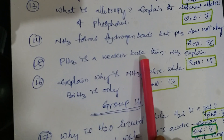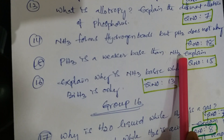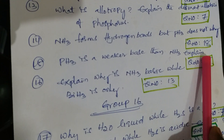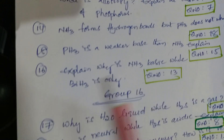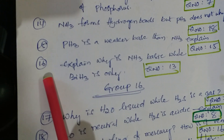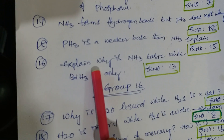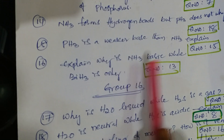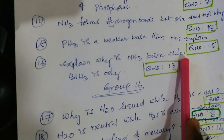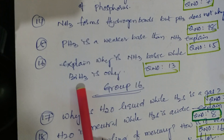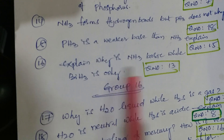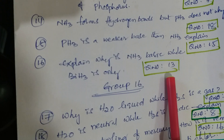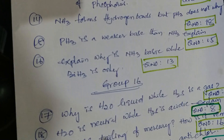PH₃ is a weaker base than NH₃ - explain. That is question number 15 from material. Next one: explain why NH₃ is basic while bismuth hydride is weak only - that is question number 13 from material.